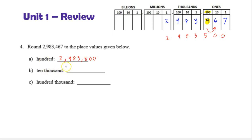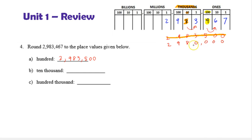Now let's round to the nearest ten thousand. Here's our thousands grouping and here's our ten thousands place. We want to work with the original number, so I'm going to cross the previous answer off. The digit in the ten thousands place is eight. The digit to the right is three, which is less than five, so we're not going to round up — we keep the eight. We keep all digits to the left: 2, 9, 8. Everything to the right changes to zero. So to the nearest ten thousand: two million nine hundred eighty thousand.